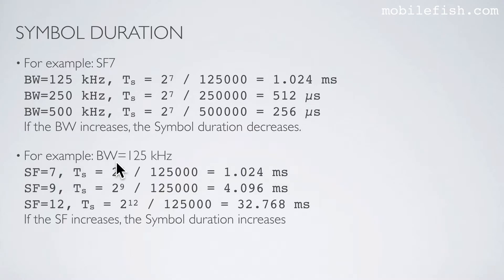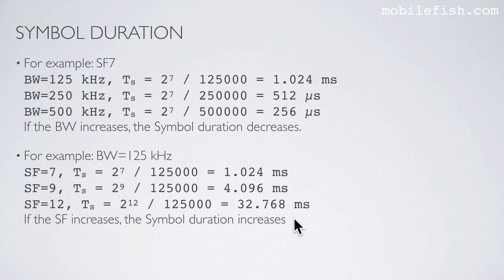Here is another example. The bandwidth is 125 kHz. Here are three different spreading factors and the calculated symbol durations. As you can see, if the spreading factor increases, the symbol duration also increases.